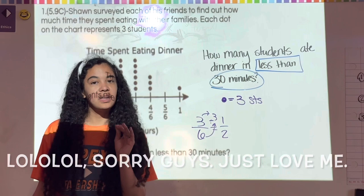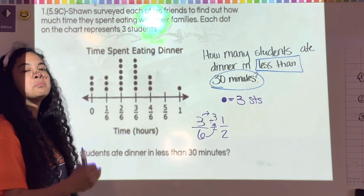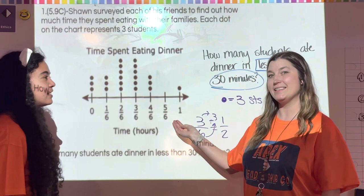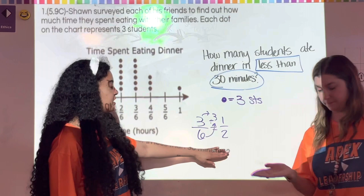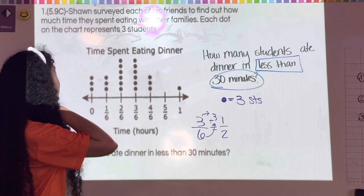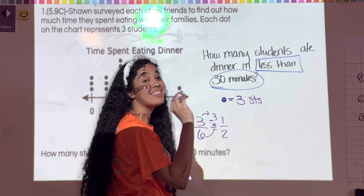Zero minutes is one end, 60 minutes is the other end, and 30 minutes is right in the middle — half of an hour. So zero, sixty, and thirty in the middle. Now we know we're looking for less than 30 minutes.